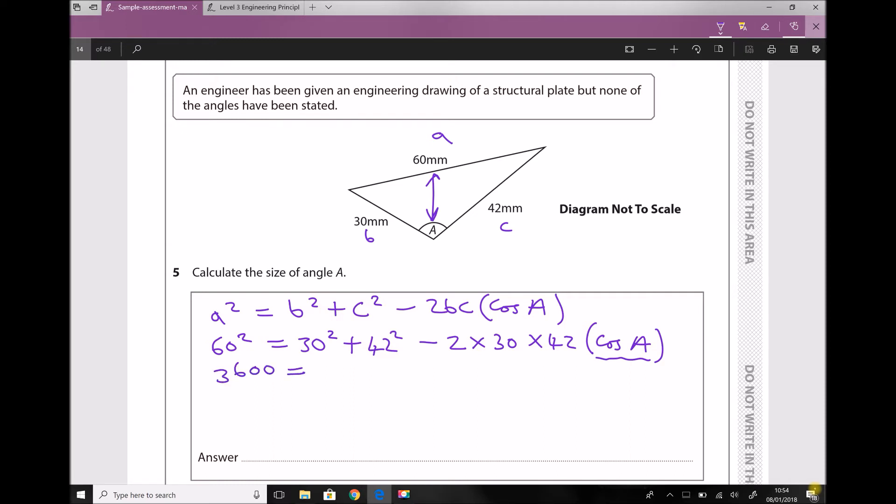30 squared is 900, and 42 squared is 1764. I'm also going to multiply out 2 times 30 times 42, which is 2520.